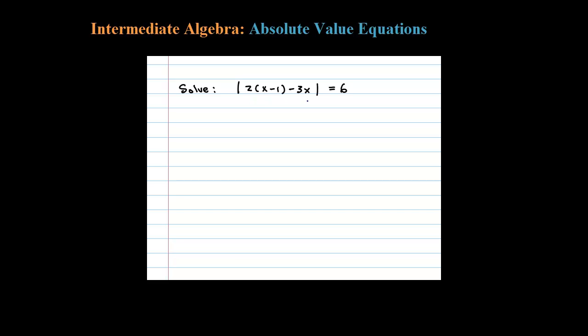Here we're asked to solve an absolute value equation. The absolute value is already isolated, so let's work the operations inside. We have 2x minus 2 minus 3x in the absolute value equals 6. I distributed the 2.